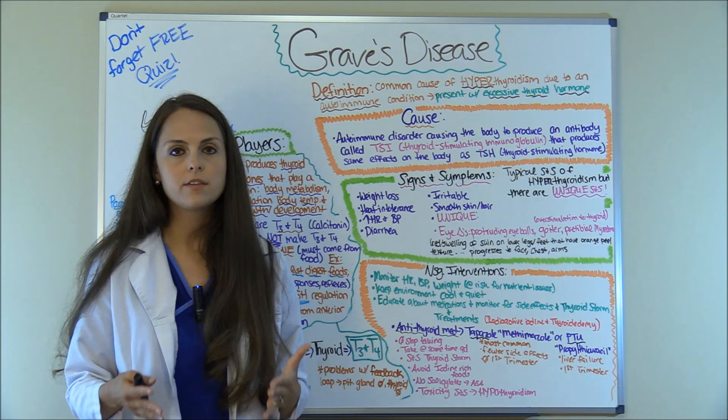Another thing the patient could be started on medication-wise are beta blockers. Why beta blockers? With this condition we have tachycardia, high blood pressure, and heat intolerance, and beta blockers help prevent the effects of T3 and T4 on the body. A popular one is Inderal — it'll decrease that heart rate and blood pressure, and help the patient with heat intolerance. However, beta blockers are not for patients who have a history of asthma or bronchospasms because it can exacerbate that. Also, you have to watch giving beta blockers to patients who are diabetic because they can mask the typical signs and symptoms of hypoglycemia — like tachycardia and sweating — so educate your diabetic patient if they are started on this.